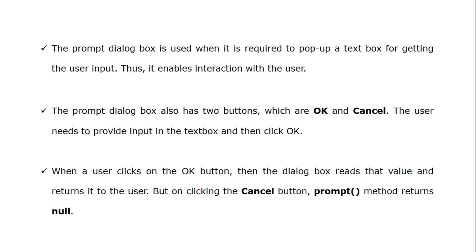The prompt dialogue box is used when it is required to pop up a text box for getting user input, thus it enables interaction with the user. We use a prompt dialogue box whenever we want the opinion of the user. The prompt dialogue box has 2 buttons: OK and Cancel. OK means the value is true and Cancel means the value is false. The user needs to provide input in the text box and then click on the OK button.